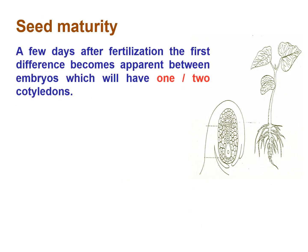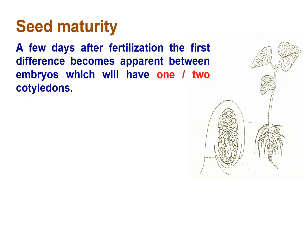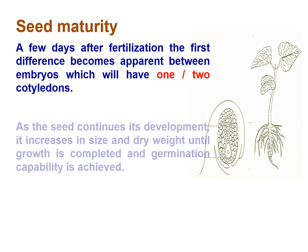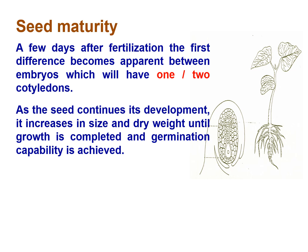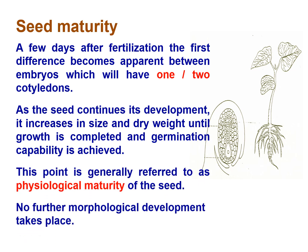Seed Maturity: A few days after fertilization, the first difference becomes apparent between embryos that will have one or two cotyledons. As the seed continues its development, it increases in size and dry weight until growth is completed and germination capability is achieved. This point is generally referred to as physiological maturity of the seed, after which no further morphological development takes place.